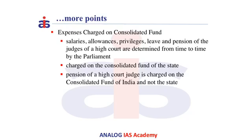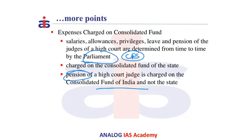The salaries, allowances, privileges, leave and pension of a Judge of a High Court are determined from time to time by the Parliament, and they are charged on the Consolidated Fund of the State. Being charged on the fund means that it is non-votable. Therefore, this ensures that the salaries are not curtailed if the Judge gives any verdict against the Government. The point to be remembered here is that the Pension of a High Court Judge is charged on the Consolidated Fund of the State and not on the Consolidated Fund of India.